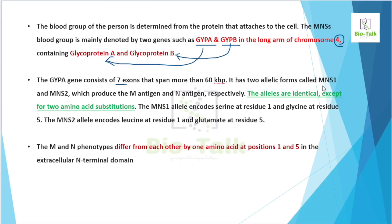In the MNS blood group system, the M and N phenotypes differ from each other by one amino acid residue. The MNS system involves the glycophorin protein. The M and N phenotypes differ in the amino acid sequence — one amino acid difference at position one of the glycophorin chain makes the molecular distinction between M and N antigens.